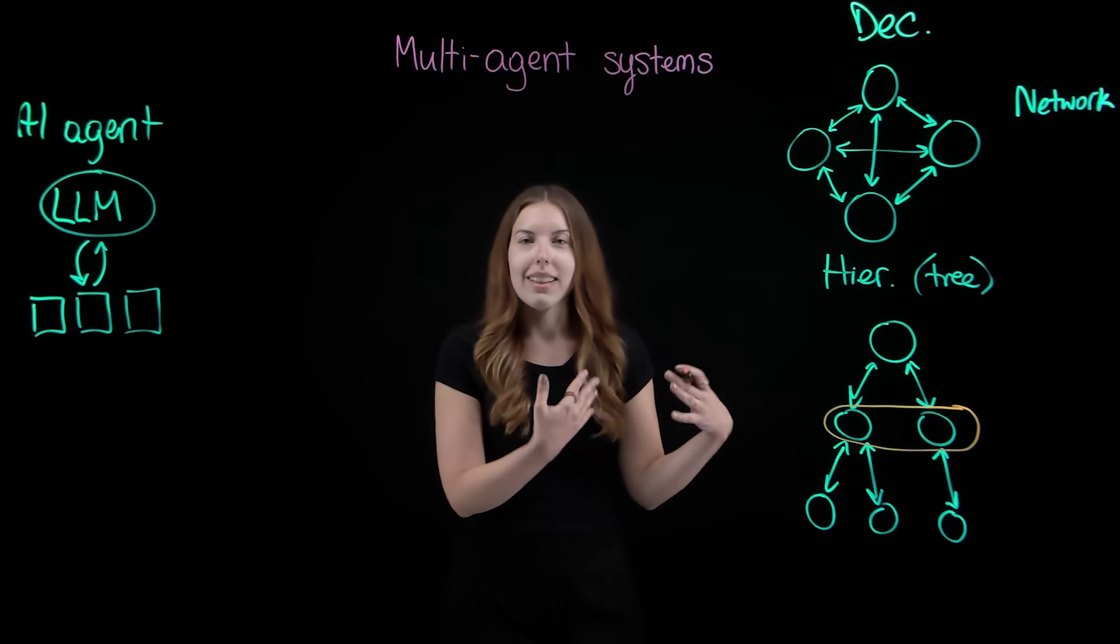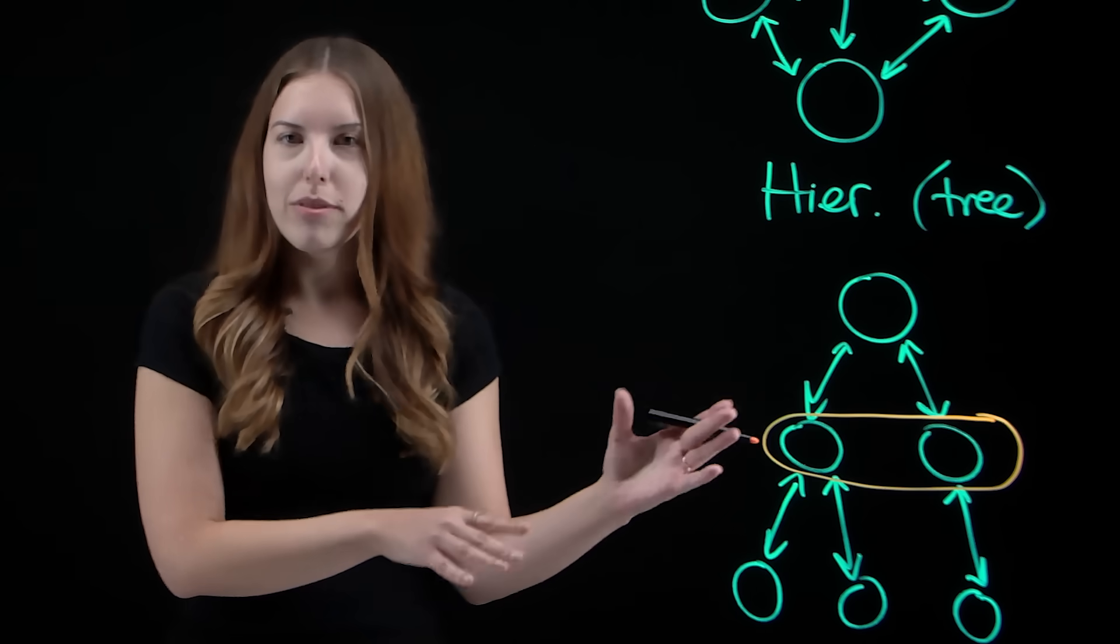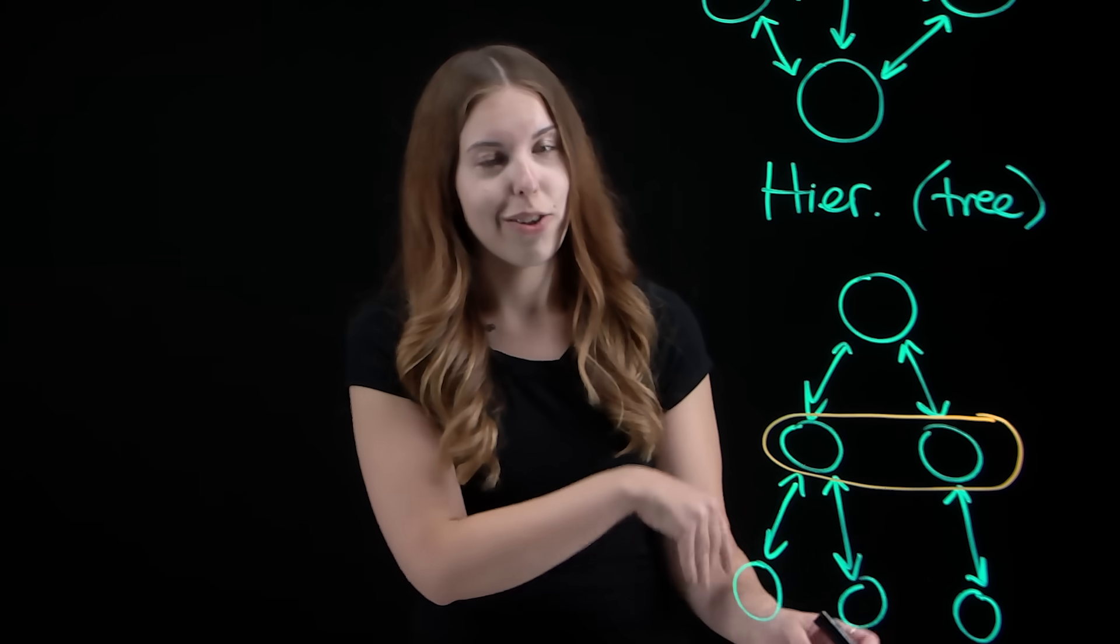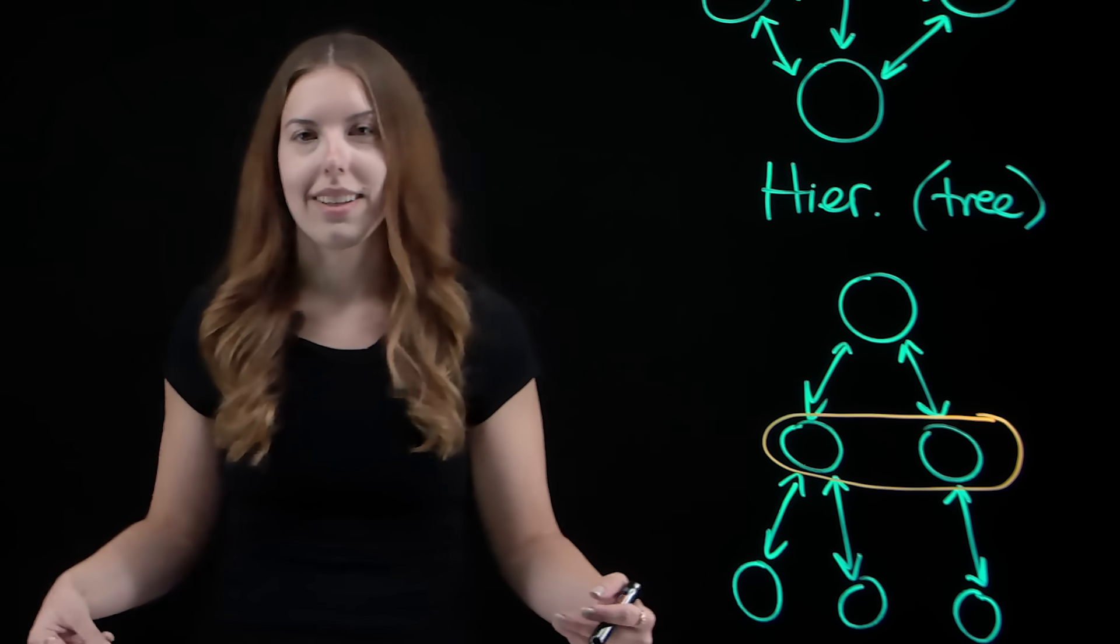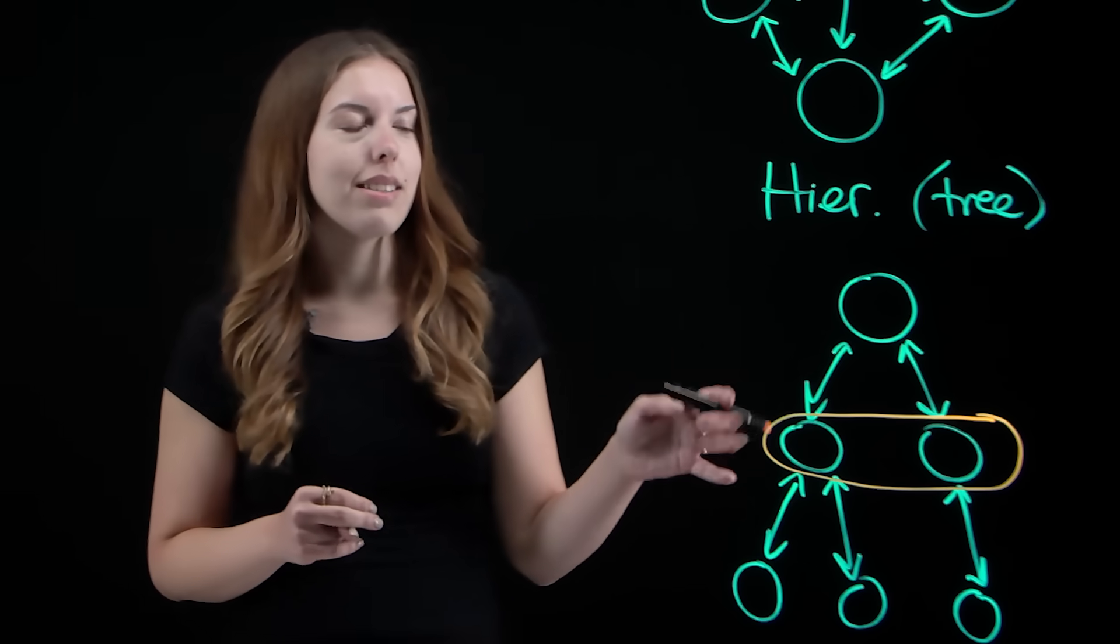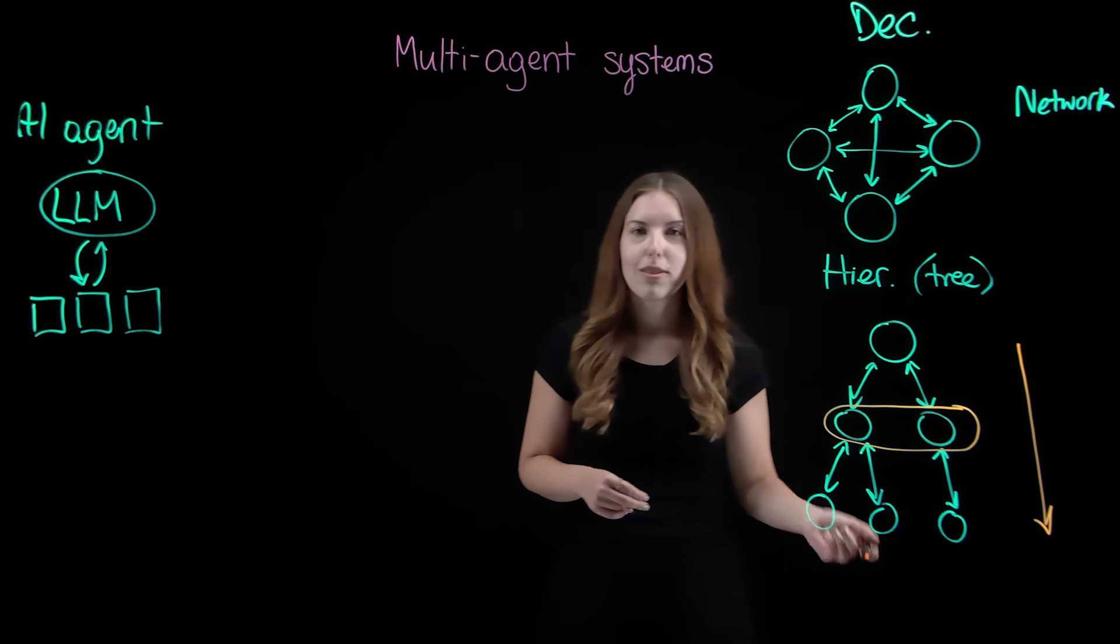And the agents coordinate laterally, meaning at the top of the structure, you might have a single manager or a coordinator agent. And in the middle levels, there are supervisor agents, each managing a group of agents below them. And at the bottom, these are the worker agents, so they're directly performing the tasks. And this structure helps break down responsibilities. So higher levels coordinate, lower levels execute.